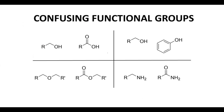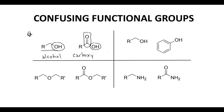Before we jump into the problems, let's quickly look at four frequently confused pairs of functional groups. In the upper left, we have a molecule that contains an OH group, so students will say this is an alcohol — and that's correct. The molecule just to the right also has an OH group, so it's easy to say that is an alcohol. But it's not, because it has right next door a carbonyl. This collective functional group — the carbonyl plus the OH — has a special name: it is called a carboxylic acid. Don't just look at the pieces; try to identify the largest whole that contains those different pieces.